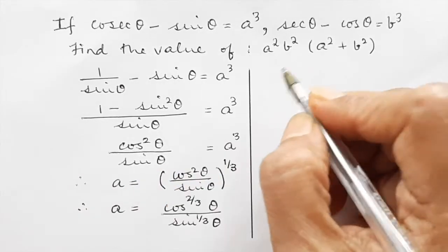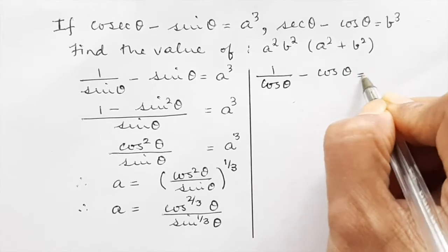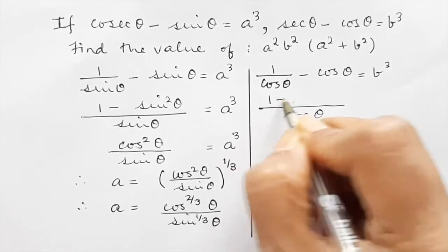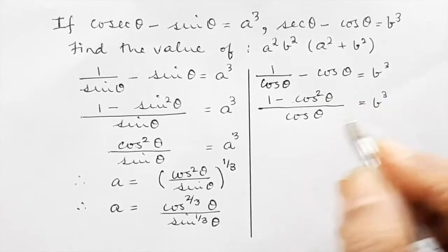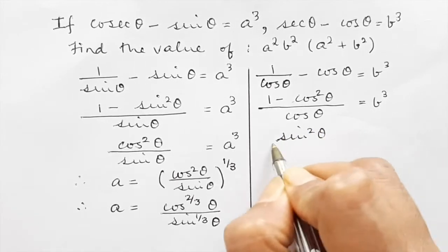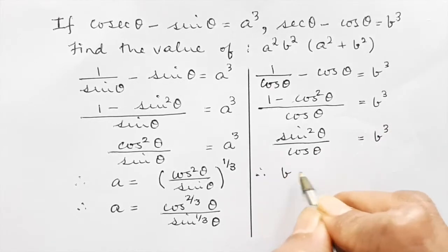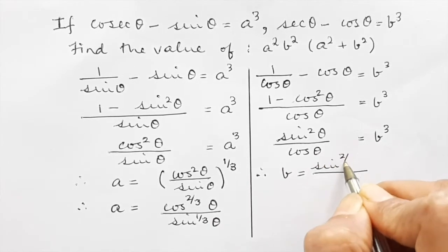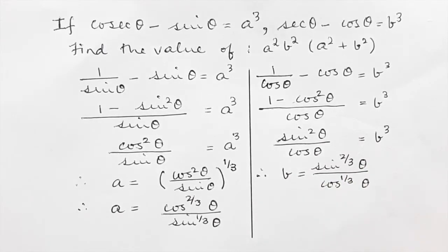Now for the second part, b³ = sec θ minus cos θ = 1/cos θ minus cos θ. Taking cos θ as the LCM, the numerator becomes 1 minus cos²θ, which is sin²θ. So sin²θ / cos θ = b³. Taking the cube root, b = sin^(2/3)θ / cos^(1/3)θ.